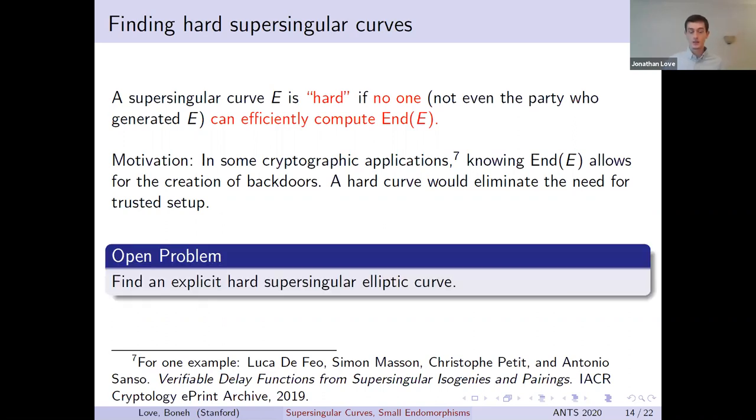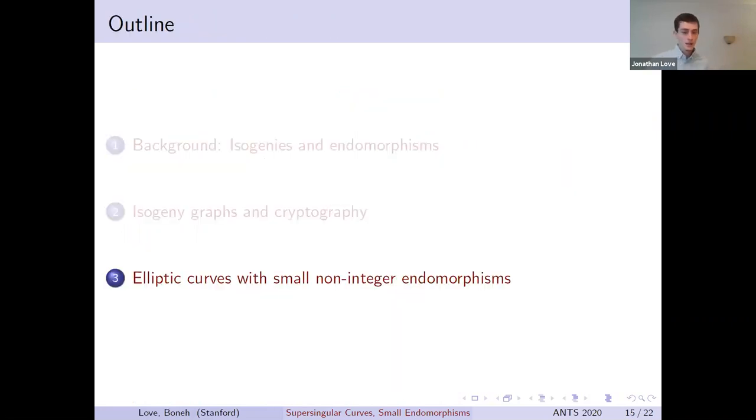Unfortunately, no one knows how to construct such a hard curve. Part of the problem with this is that whenever you take a walk on an L-isogeny graph from a starting point where you know the endomorphism ring, you can use the path to compute the endomorphism ring of all of the points along the way. So any candidate hard curve can't be generated using walks on an isogeny graph. Alternate methods are needed. This need for alternate methods was our motivation for exploring the set of curves that will be the focus for the rest of the talk. Unfortunately, these curves are not hard in the above sense, so the problem of generating a hard curve is still open. However, we will see that there is structure in this set that can't be seen using l-isogeny graphs alone.